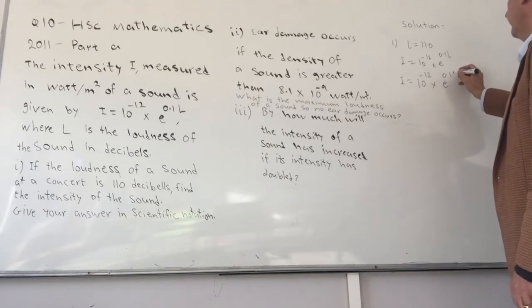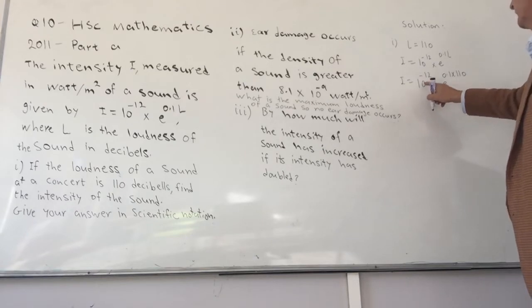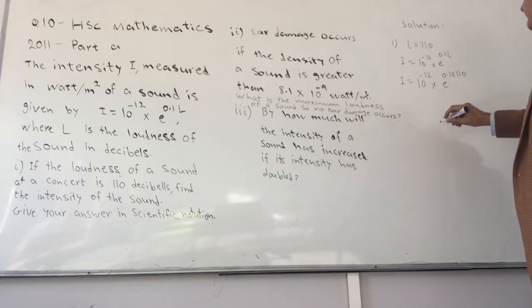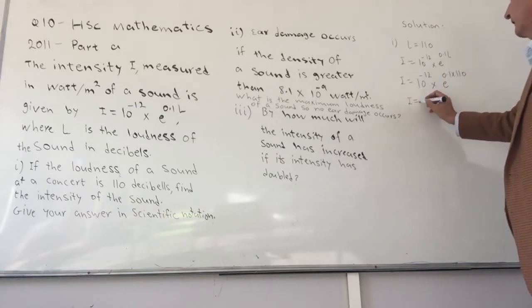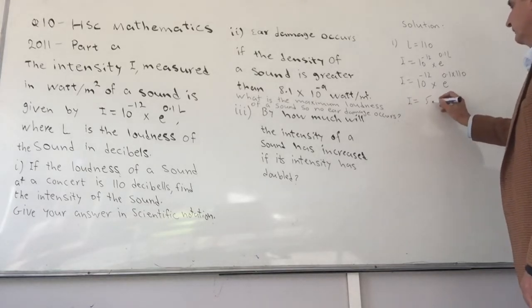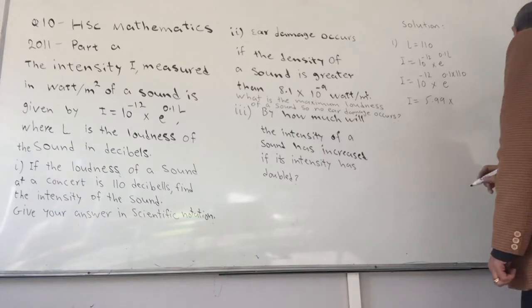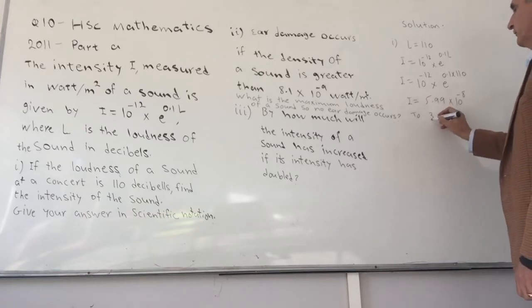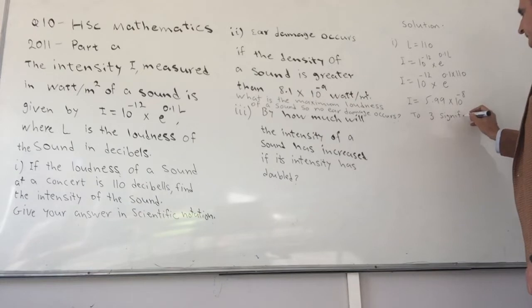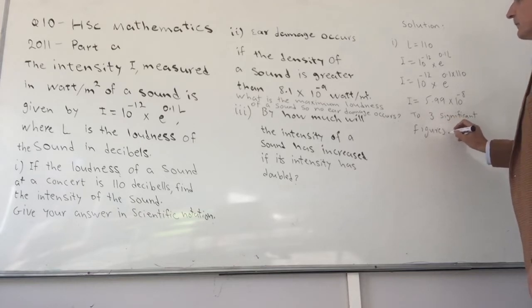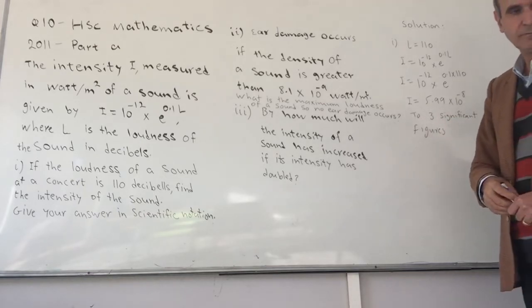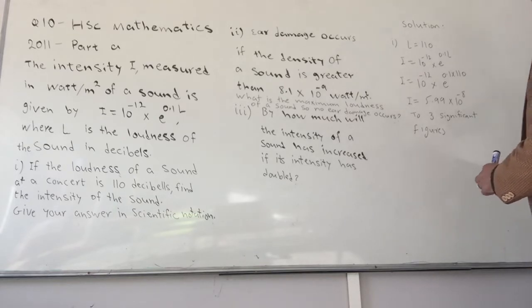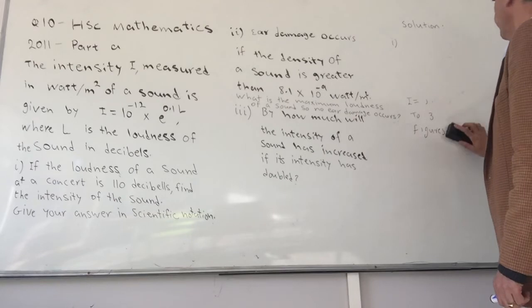This gives us I equals 10 to the minus 12 times e to the power of 0.1 times 110. Typing that in your calculator and writing your answer to three significant figures, that is for part i.